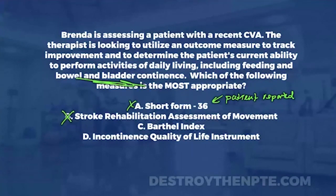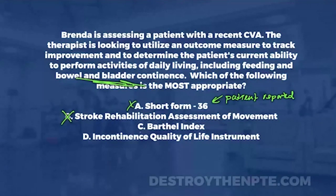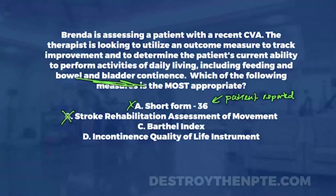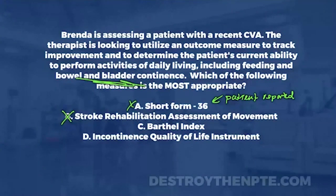Option C is the Barthel Index — a very common functional outcome measure. It measures the degree of assistance required by the individual based on mobility and self-care ADLs. I use the mnemonic A, B, C, D, T, T — which stands for ambulation, bathing, continence, dressing, toileting, and transferring. The Barthel Index looks at all of those things, as well as stair negotiation and feeding. It addresses continence, feeding, and definitely addresses ADLs — exactly what we need.